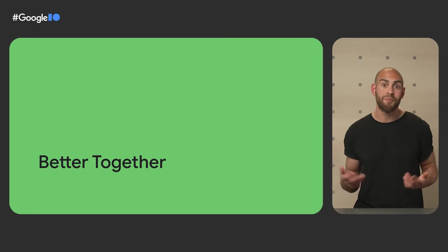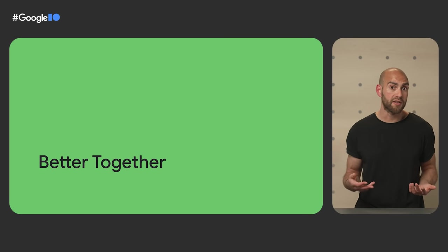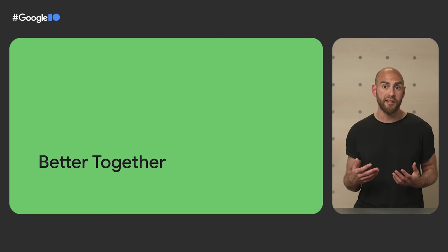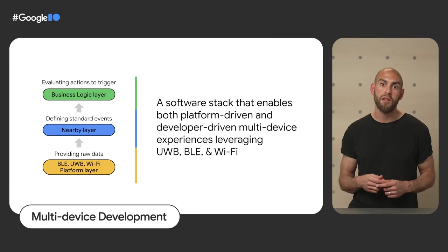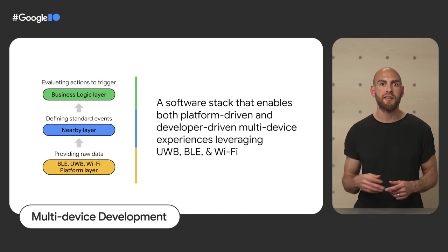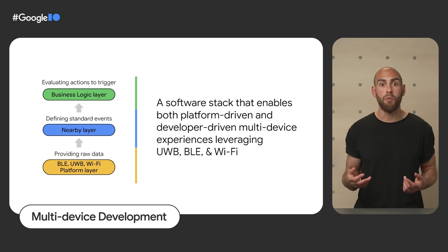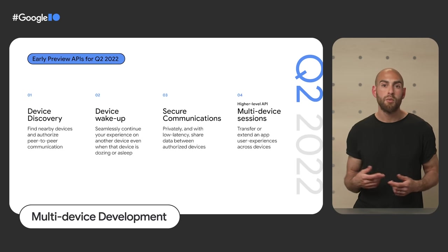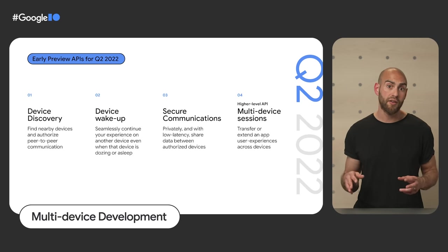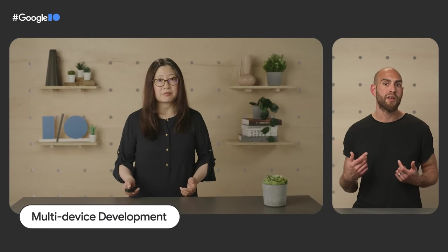Increasingly, users have more smart devices in their lives, and they expect app experiences to work seamlessly across them. Android lets you build for all these devices — from TVs to watches to smart speakers — with the phone at the center of your connected world. We're building a software stack to enable multi-device experiences leveraging ultra-wide band, BLE, and Wi-Fi. Our cross-device APIs abstract away the underlying connectivity technologies, offering device discovery and wake-up, secure communications, and multi-device transfer to build seamless hand-off experiences.